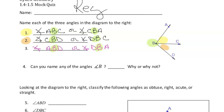You don't need to name it both ways for each angle, but I gave you both ways in case you had a different version. For example, for number one, if I wrote ABC and you wrote CBA, I want you to understand that they're the same angle. They're both correct.